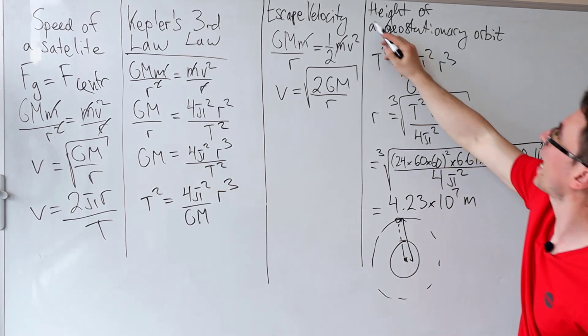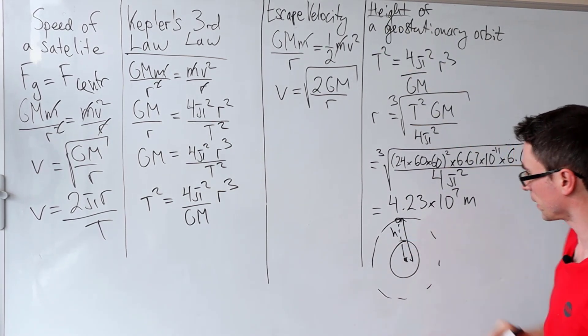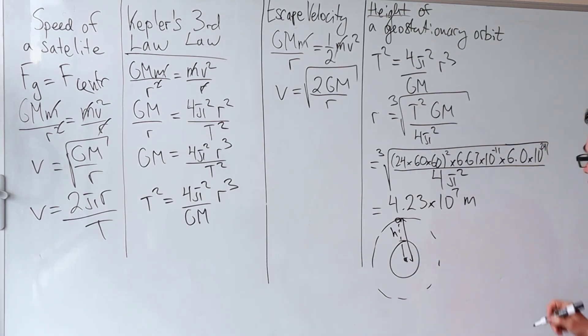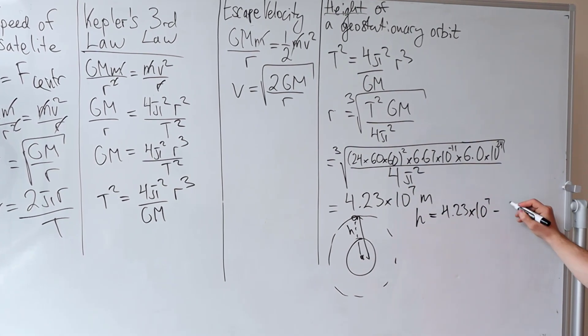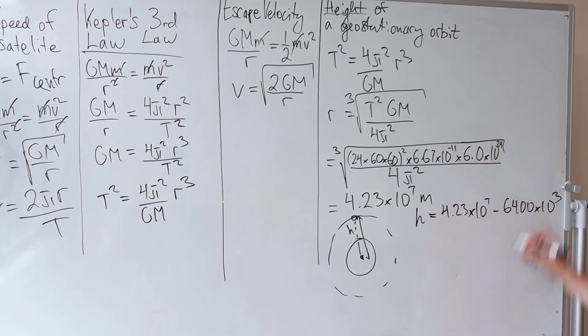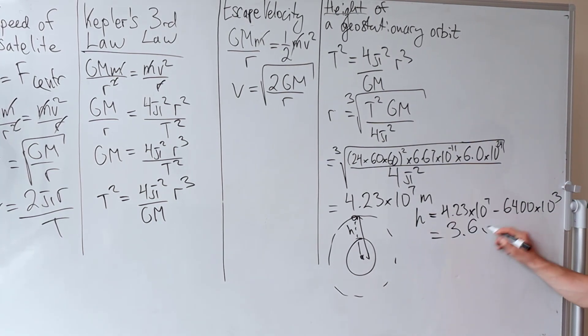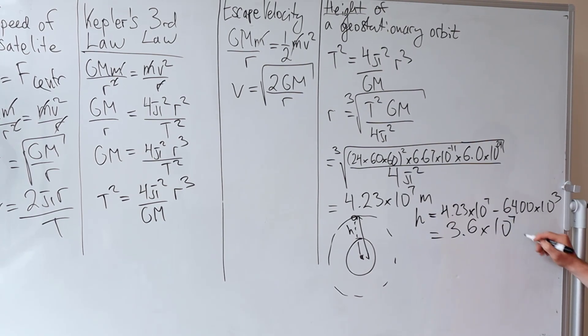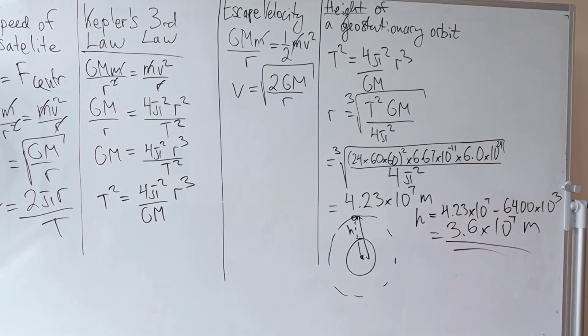In order to work out the height of a geostationary satellite, we need to take away the radius of the earth. So the height will just be 4.23×10⁷ take away the radius of the earth, which is about 6,400 kilometers. So that will be times 10³. And that should give me around 3.6×10⁷ meters or so.